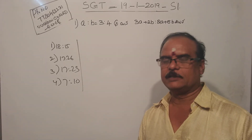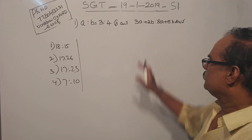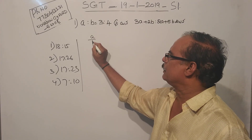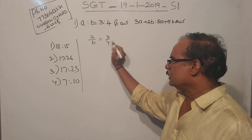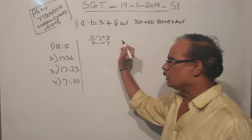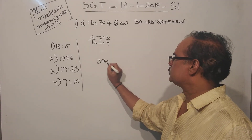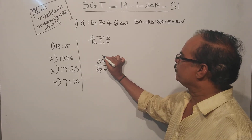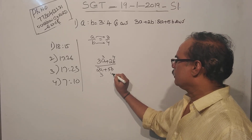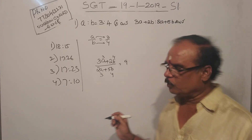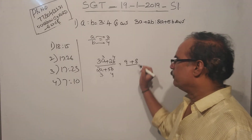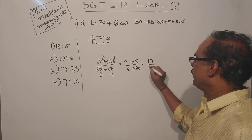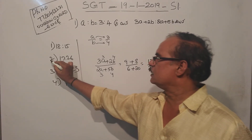So the first question is: A to B is equal to 3 is to 4. Find 3A plus 2B divided by 2A plus 5B. So A by B is 3 by 4 — A is 3 and B is 4. So substituting: 3A plus 2B divided by 2A plus 5B gives 17 by 26. So 17 by 26 is the second option.